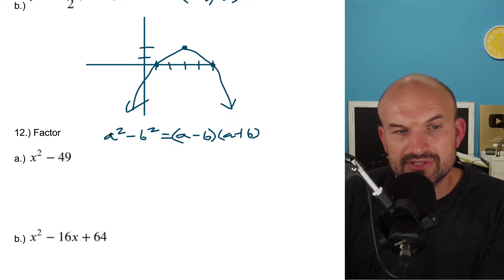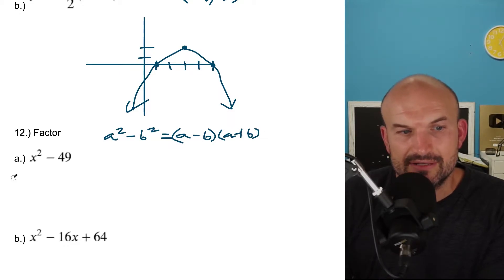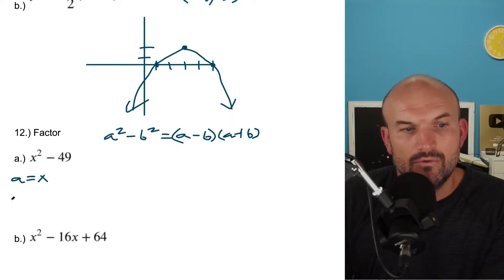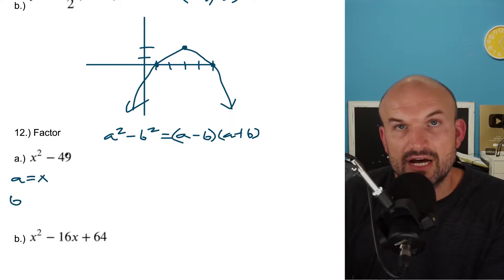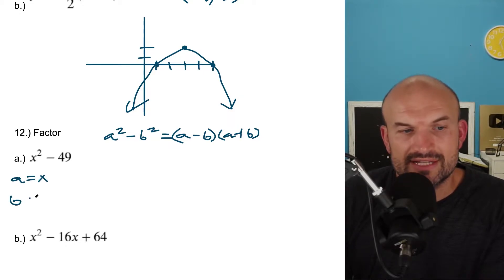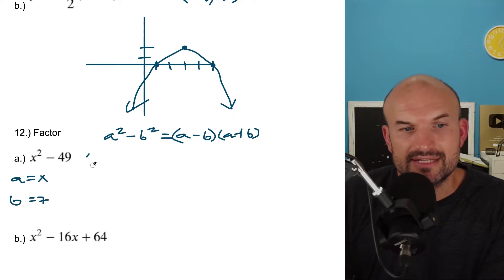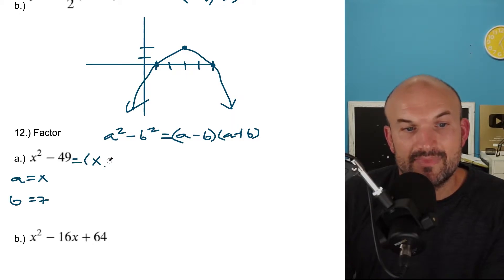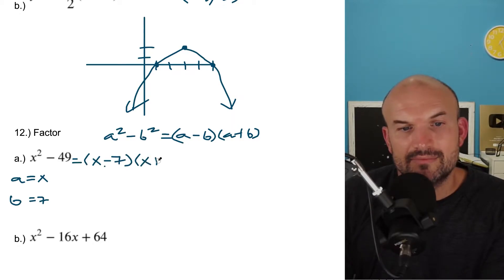What's the square root of x squared? That's just going to be x. So a equals x. What's the square root of 49? That's going to be seven. So now I can write this as x minus seven times x plus seven. And voila.